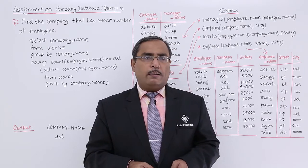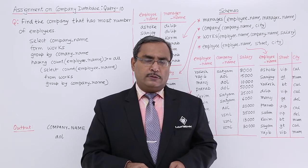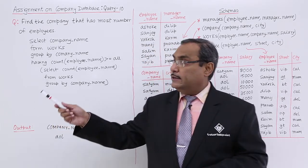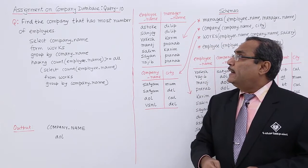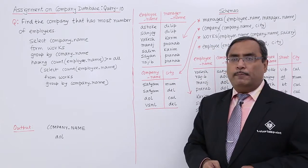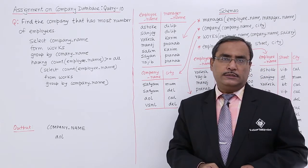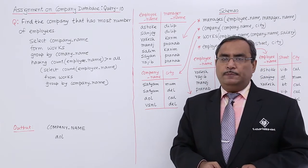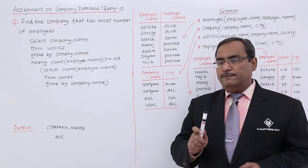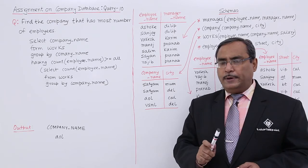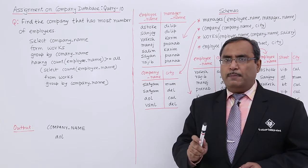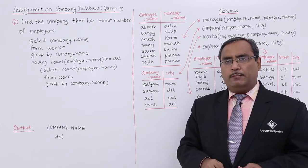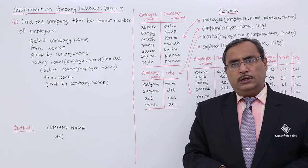We are going for query number 10. The query is: find the company that has the most number of employees. That means we are asking for the company name that has the maximum number of employees.